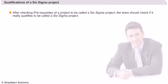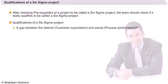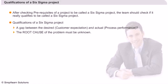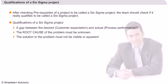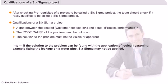After checking prerequisites, the team should verify if the project really qualifies as a Six Sigma project. The qualifications include: a gap between the desired customer expectation and actual process performance, the root cause of the problem must be unknown, and the solution must not be visible or apparent. Note that for problems where solutions can be found by logical reasoning, the 8D approach of problem solving needs to be applied — for example, if you wish to fix a leakage in a water pipe.